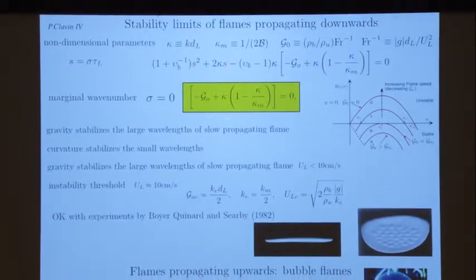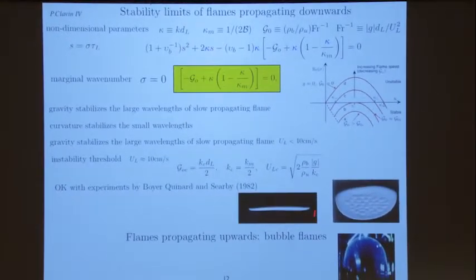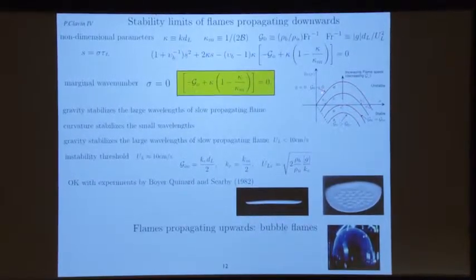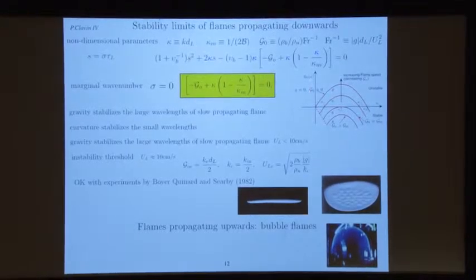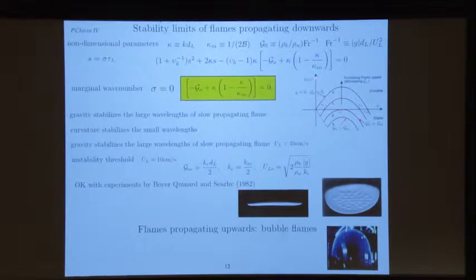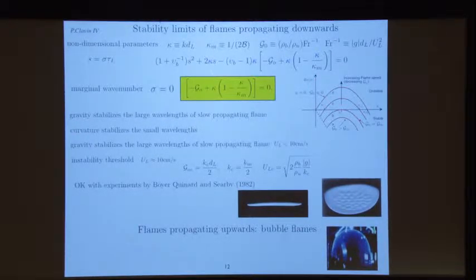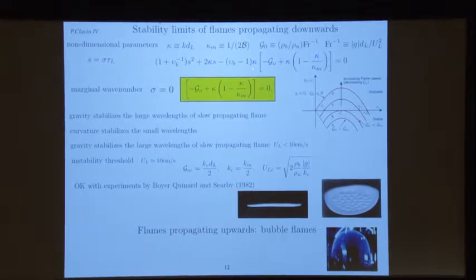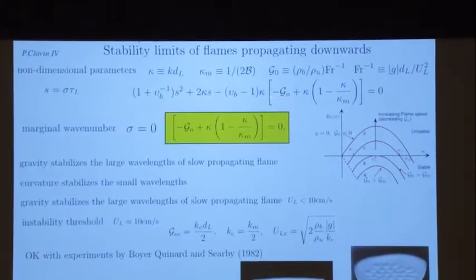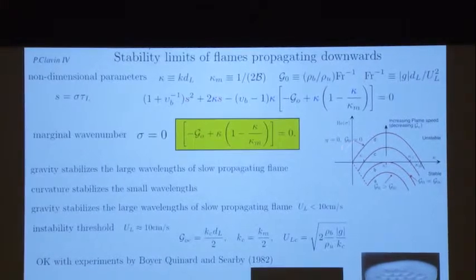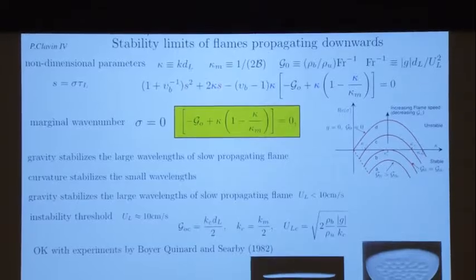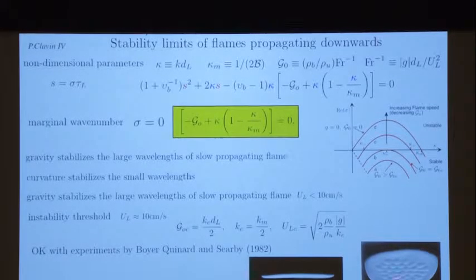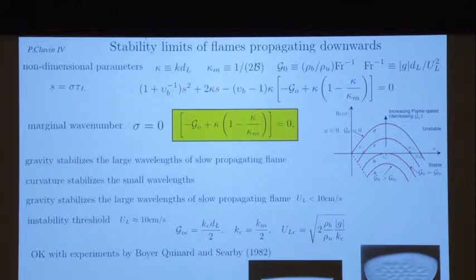If I propagate upwards, it is just the opposite. Now the G gives you a constant value here, and you have the bubble — and it looks like a bubble. So this is the end of this part of the lecture.